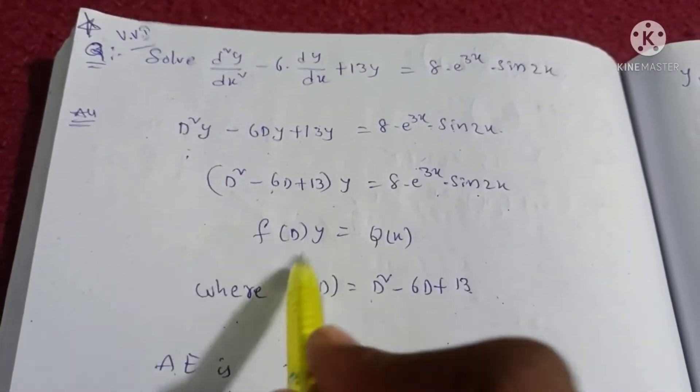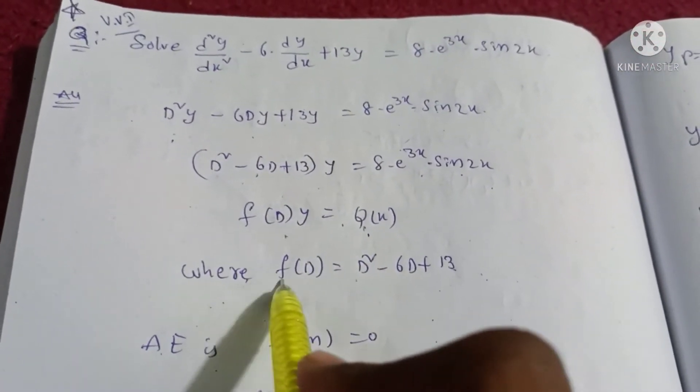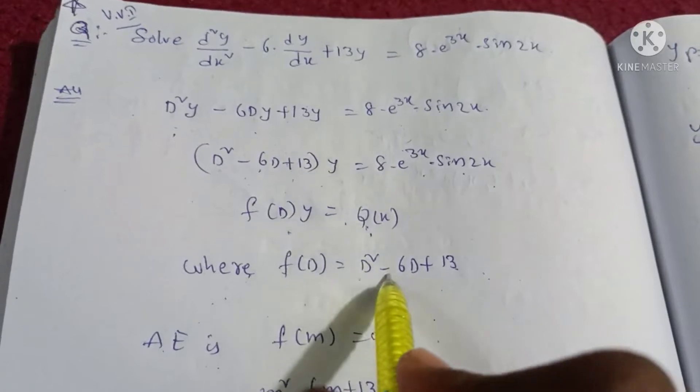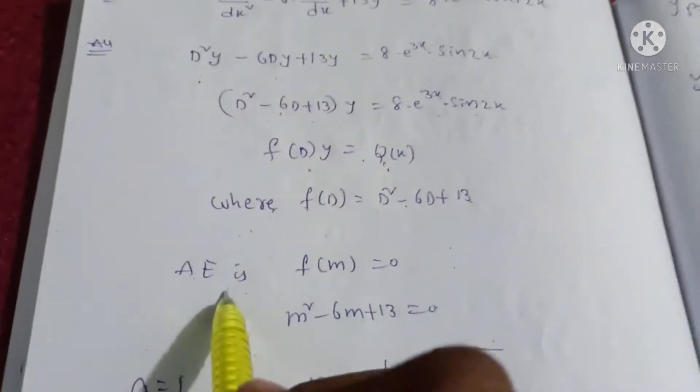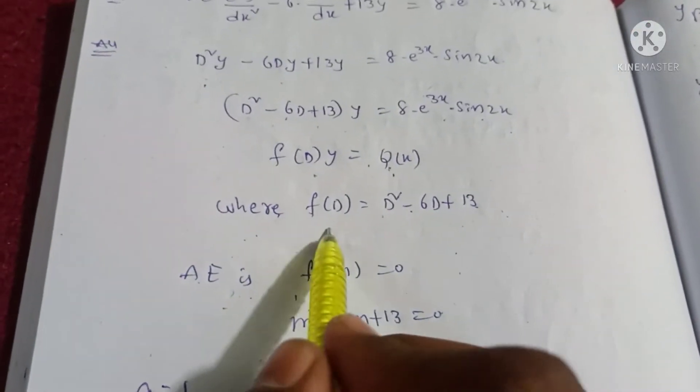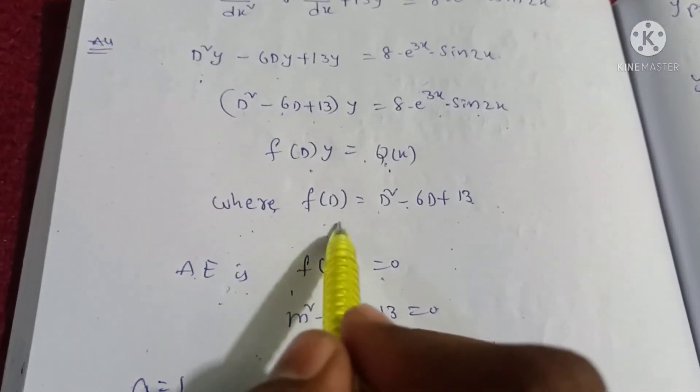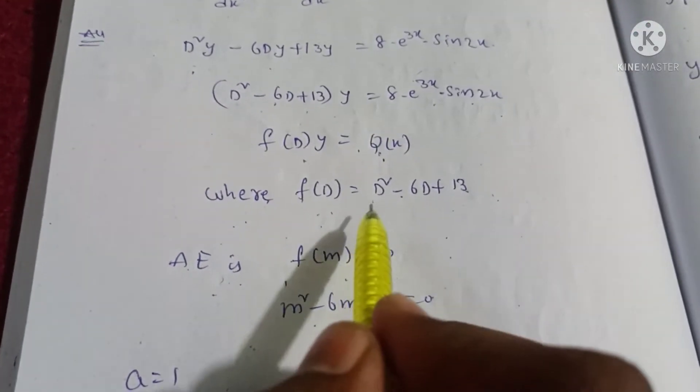Then f(D) of y is equal to Q(x), which is the standard formula where f(D) is the operator. Auxiliary equation: f(m) is equal to 0, where D is replaced by m.